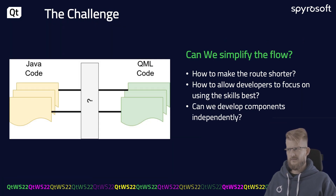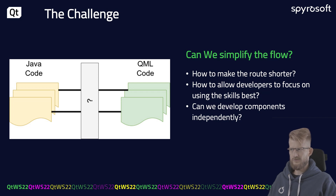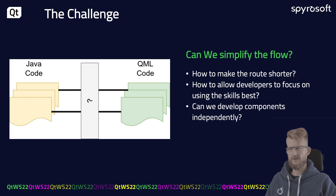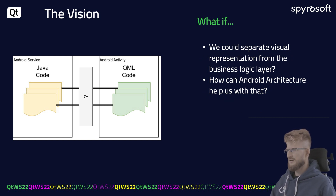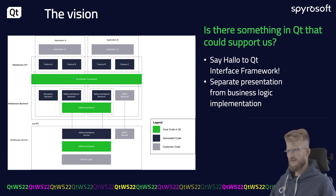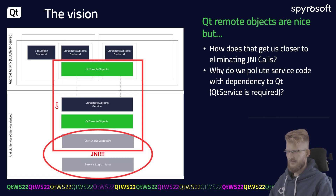Can we simplify the flow? How can we make the road shorter? How to allow developers to focus on using their skills best? Can we develop components independently? In Android, we can separate the code into a service which will handle all the logic and an activity part which will implement the UI. Qt Interface Framework provides the architecture to separate the business and presentation parts of code, which is exactly what we need. But Qt Interface Framework by default uses remote objects which require Qt to be used on both parts. Also, JNI is still needed to connect to Java code.